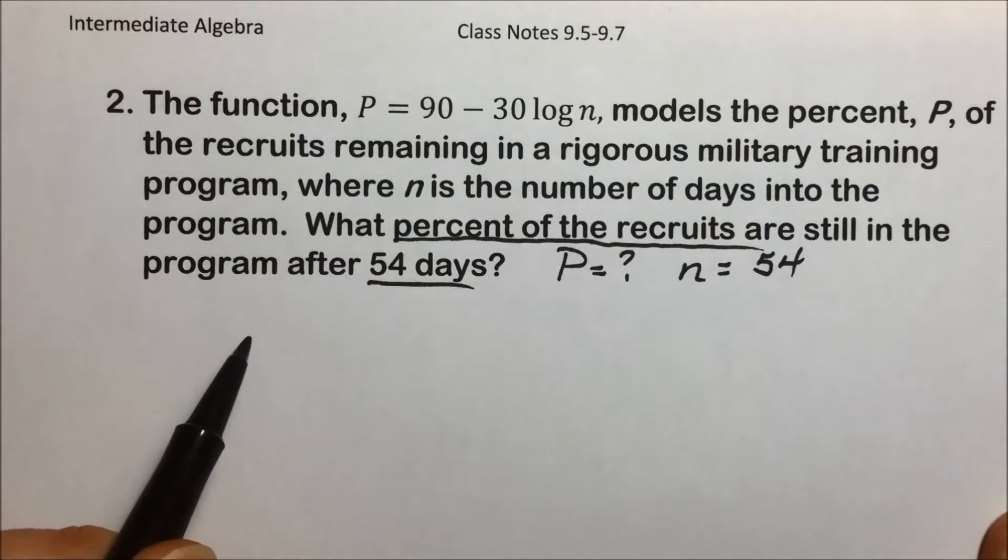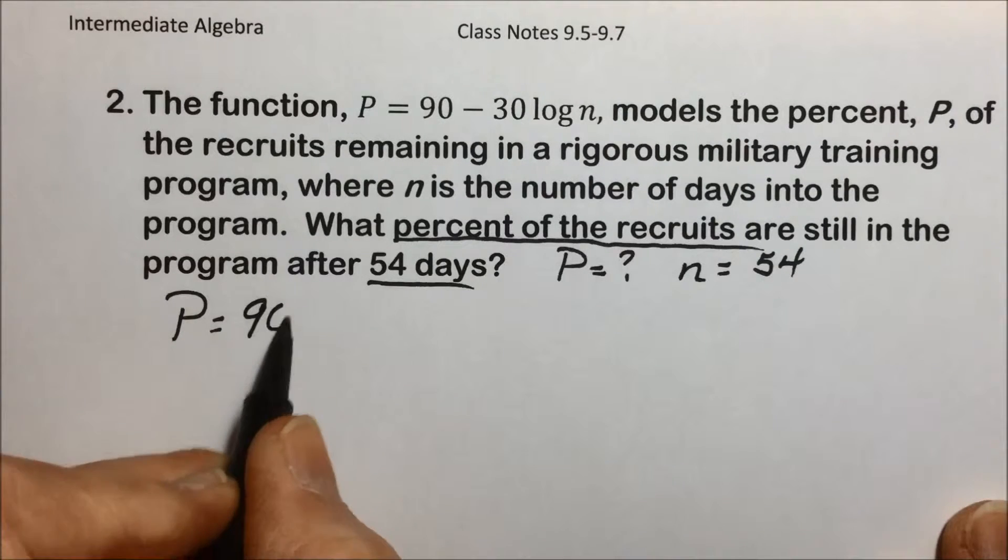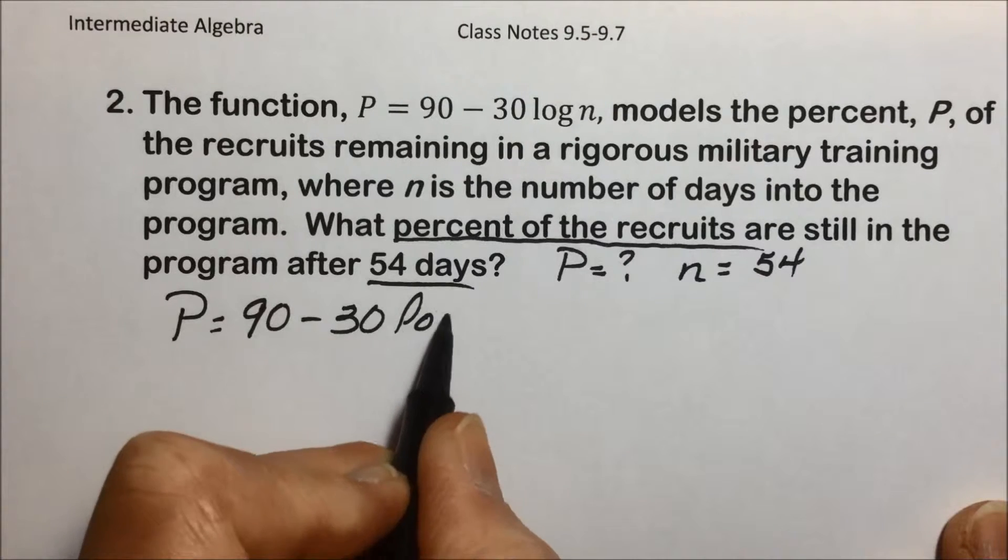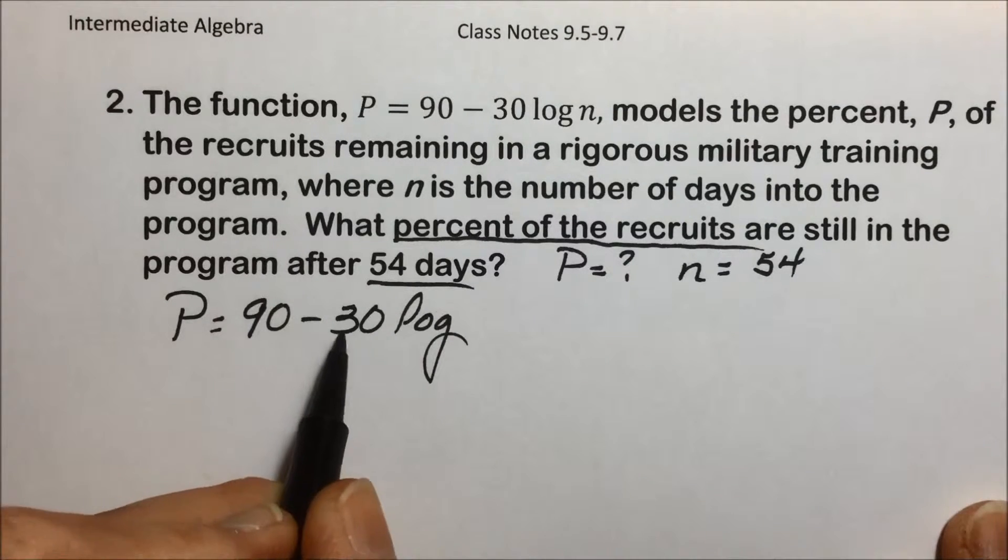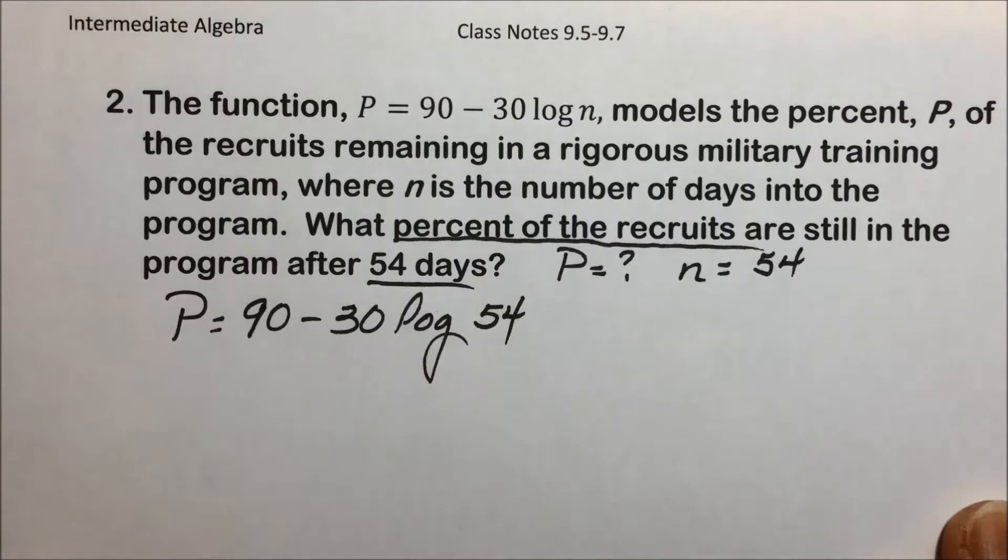This example, similar to the last one, is just a matter of simplifying once we've replaced the variable with the information that was given. So we have 90 - 30 times the log of n, n being the number of days into the program, which is given as 54.